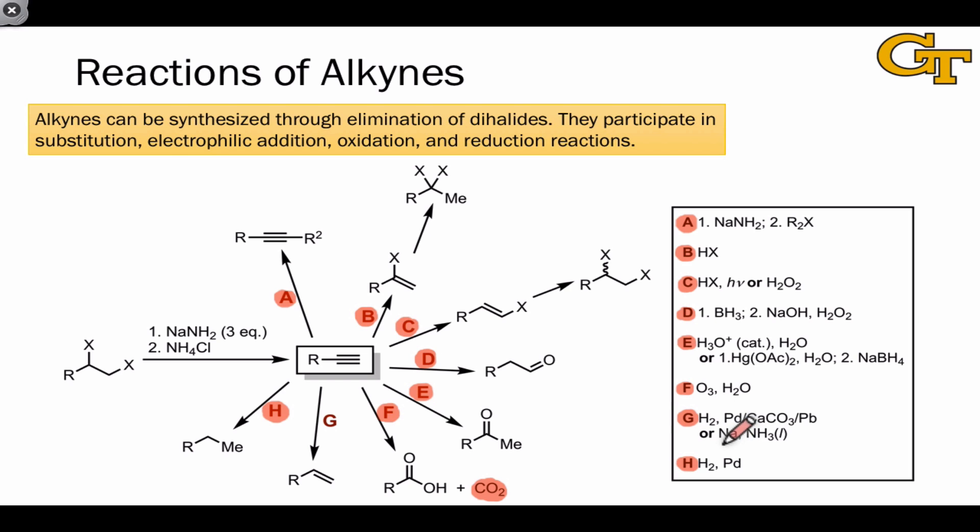While the use of dissolving metal conditions, sodium metal and liquid ammonia, gives rise to the trans alkene product. As I've shown it here, because we're going from a terminal alkyne, whether the cis or trans product forms is irrelevant, but keep in mind these conditions in general.